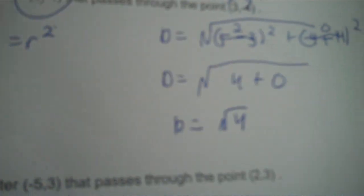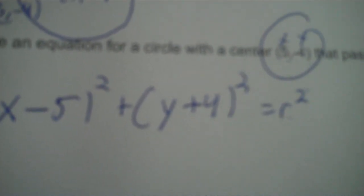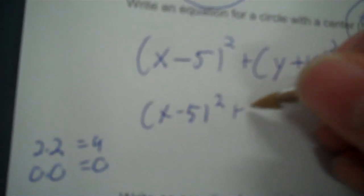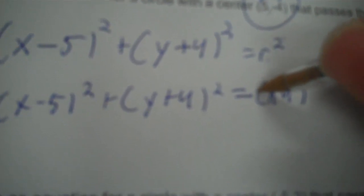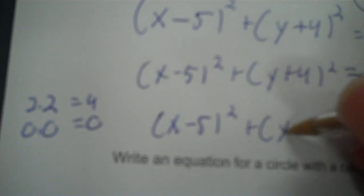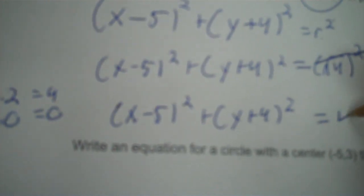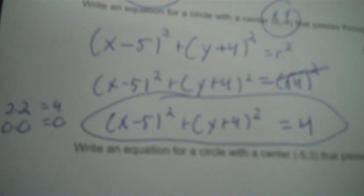You don't have to simplify your square root, and here's why — your r is to the second power. So replace your r with the square root of 4. The square root and the second power cancel, and you just have the number 4. Essentially, you can just use this inside part without the square root, and that would be your r squared.